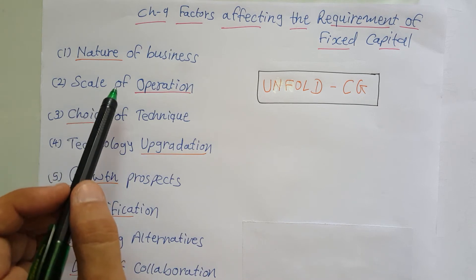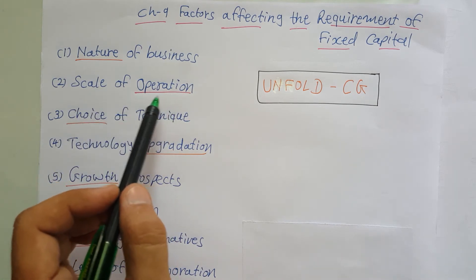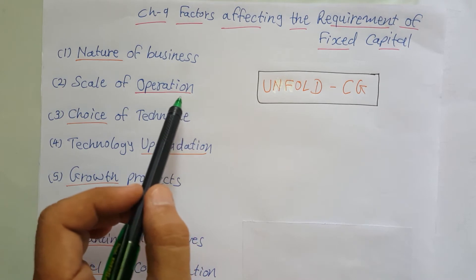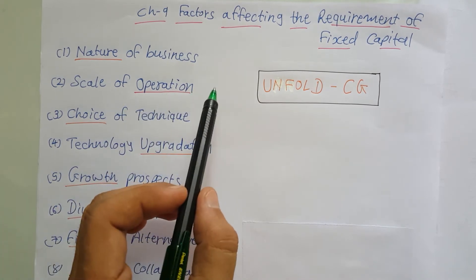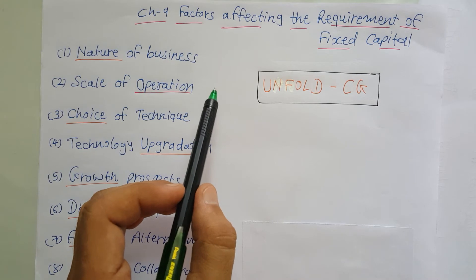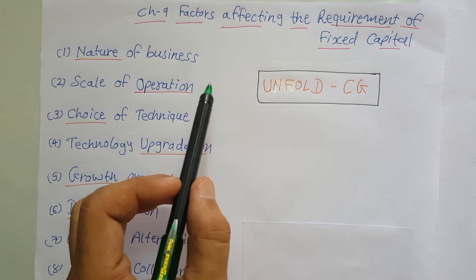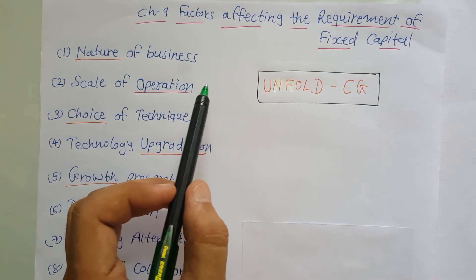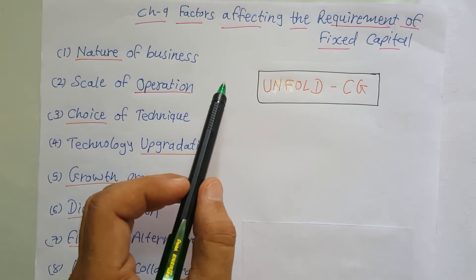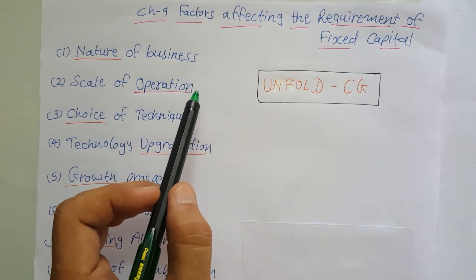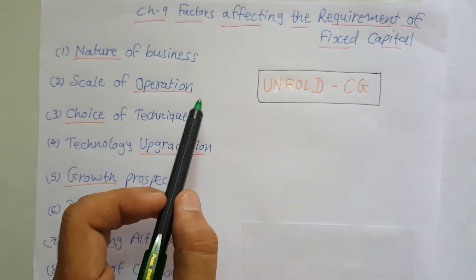Next is scale of operation. In the case of large organizations, a higher scale is needed — they want big plants, they want more space, and therefore their requirement of investment in fixed assets will also be high in comparison to small business organizations.